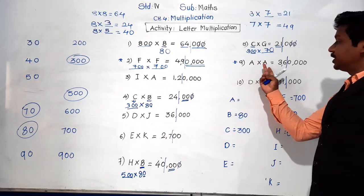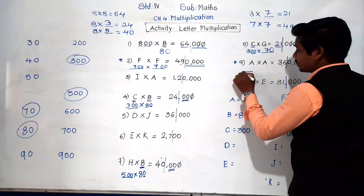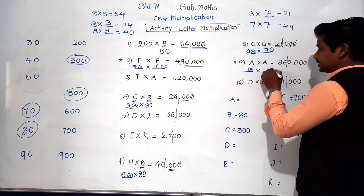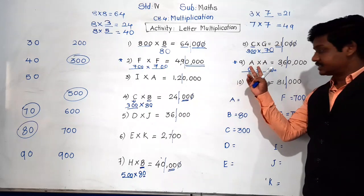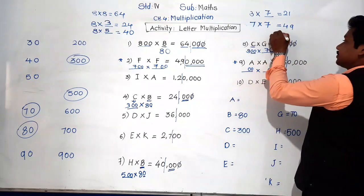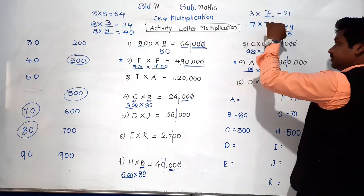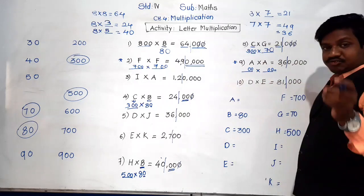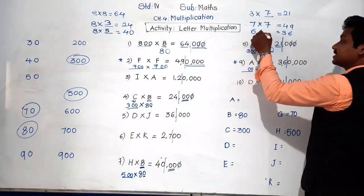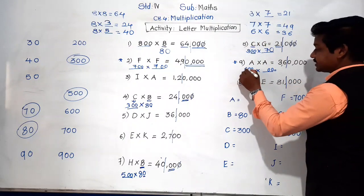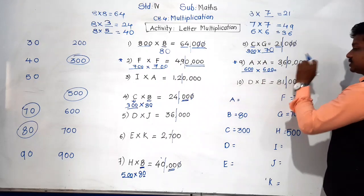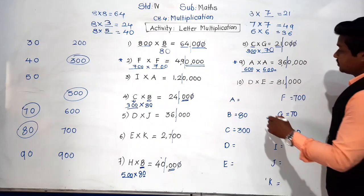Similarly, A × A = 3,60,000. Same number on both sides, total four zeros — so two zeros each. Which number multiplied by itself gives 36? 6 sixes are 36. So A represents 600. 6 × 6 = 36 and two zeros plus two zeros gives four zeros.